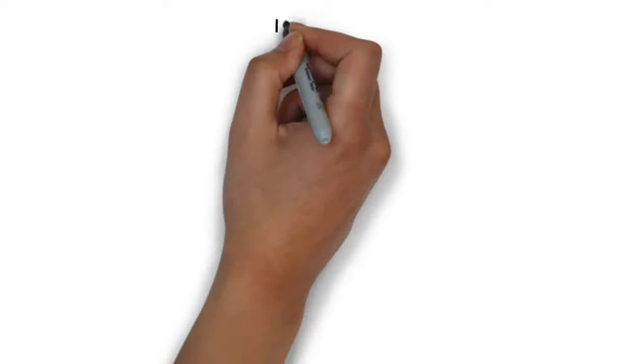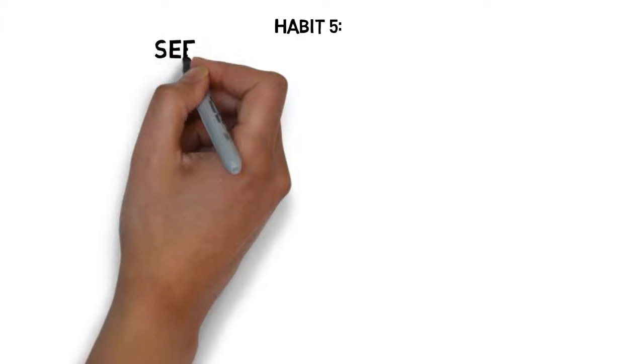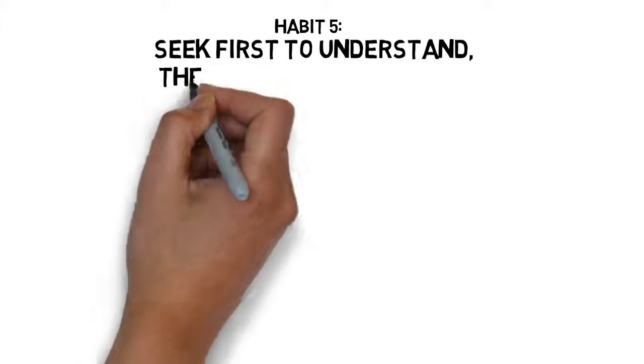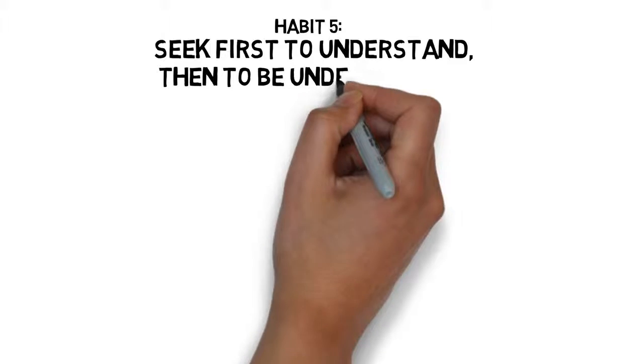This is the fifth habit of the seven habits of highly effective people, which is to seek first to understand, then to be understood. You should try to understand the first person before trying to have them understand how you see it.